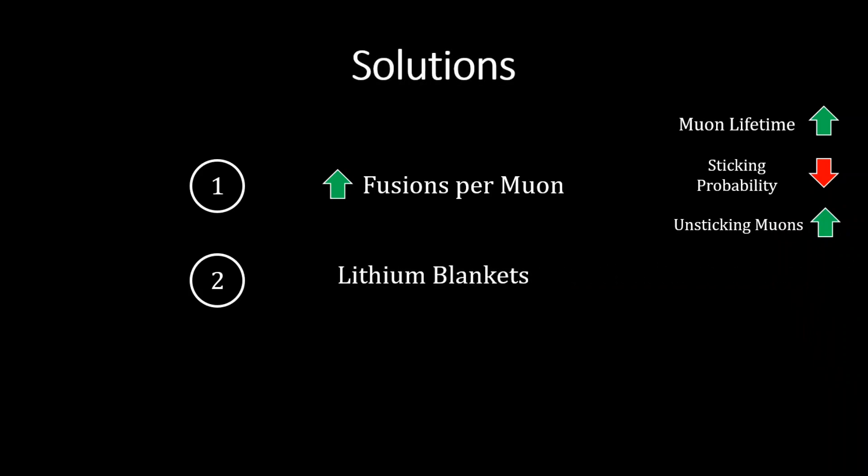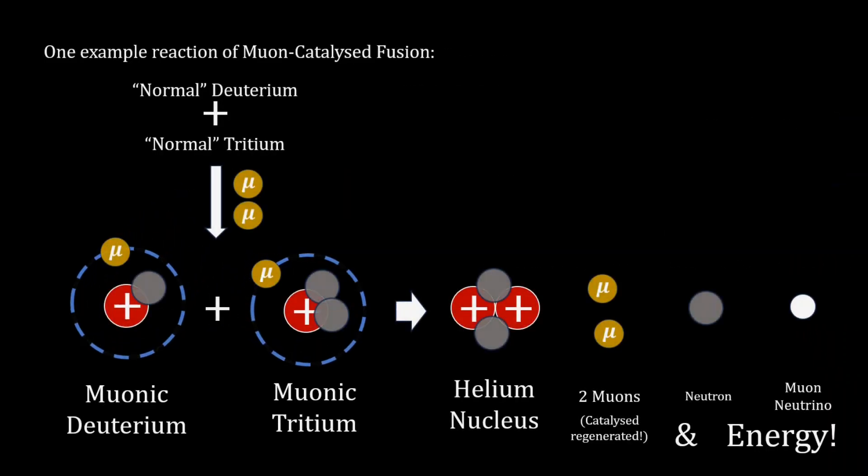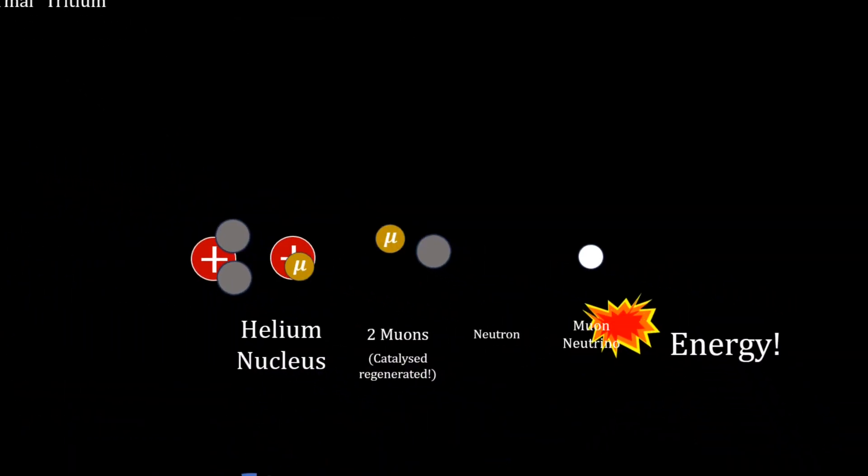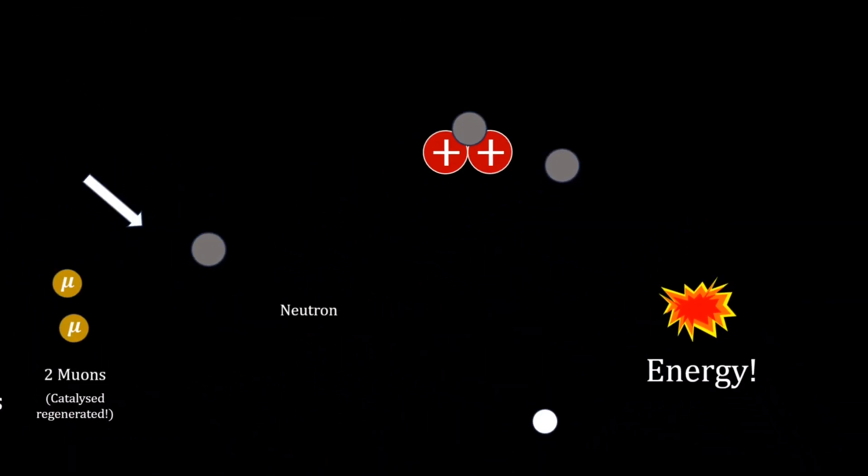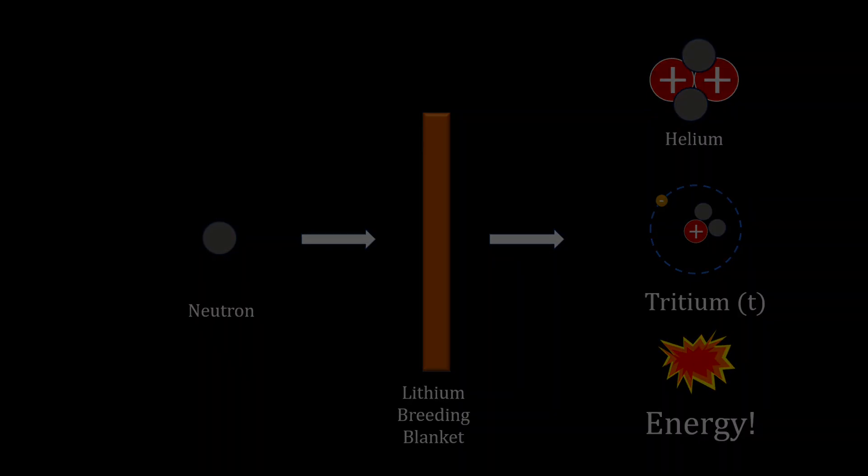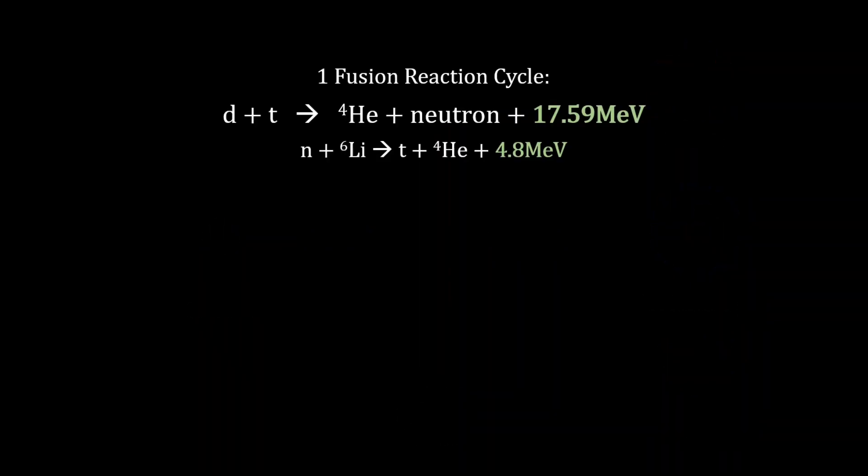Another approach is to harness the kinetic energy of the waste products. We can install a lithium blanket which captures neutron reaction products and breeds tritium with heat release. This could in theory bump up energy production to 3.9 gigaelectron volts per muon.